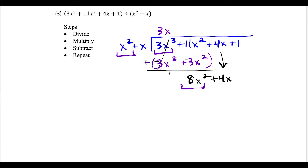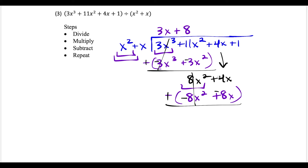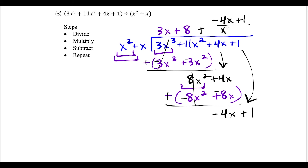Now 8x squared divided by x squared gives plus 8. Multiplying: 8 times x squared is 8x squared, and 8 times x is 8x. Subtracting — operation changes to addition, flip the signs. These cancel, and 4x plus negative 8x makes negative 4x. Drag down the 1. From here we can't divide anymore — x squared does not go into the remaining x term. So negative 4x plus 1 over x squared plus x is our remainder, and 3x plus 8 is our quotient.